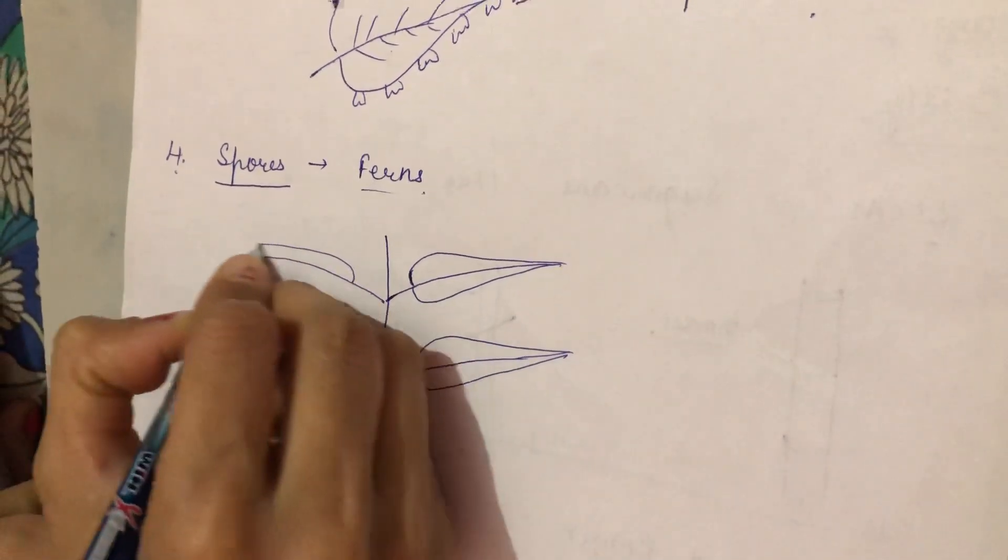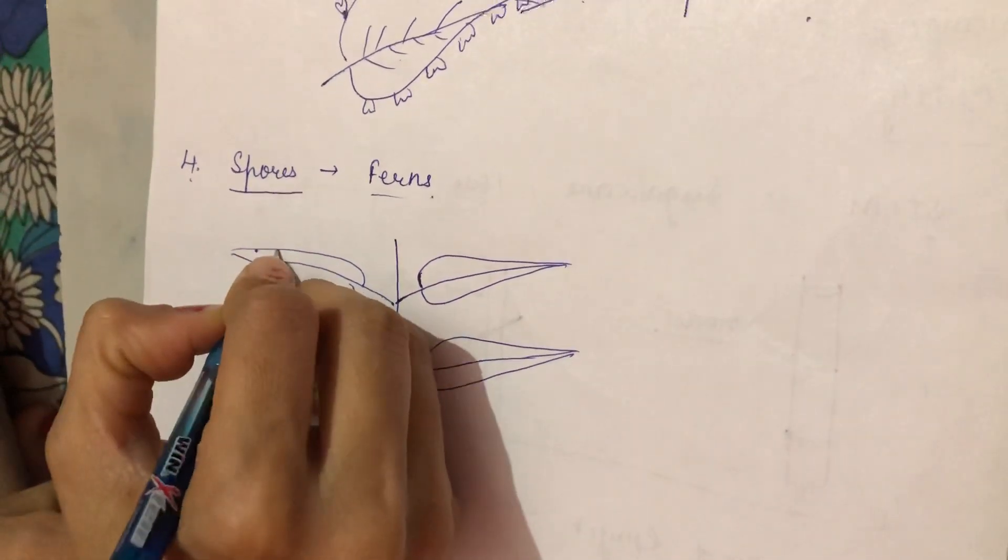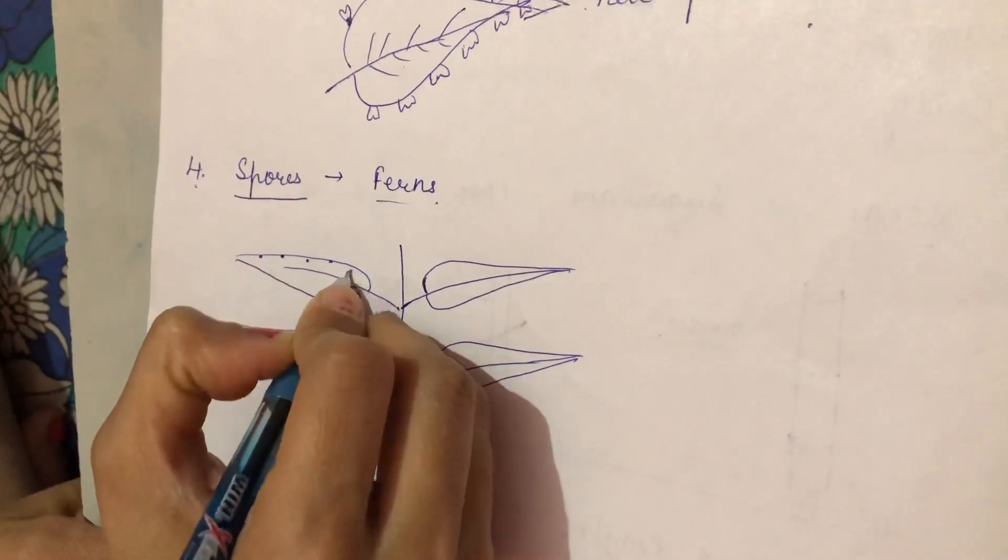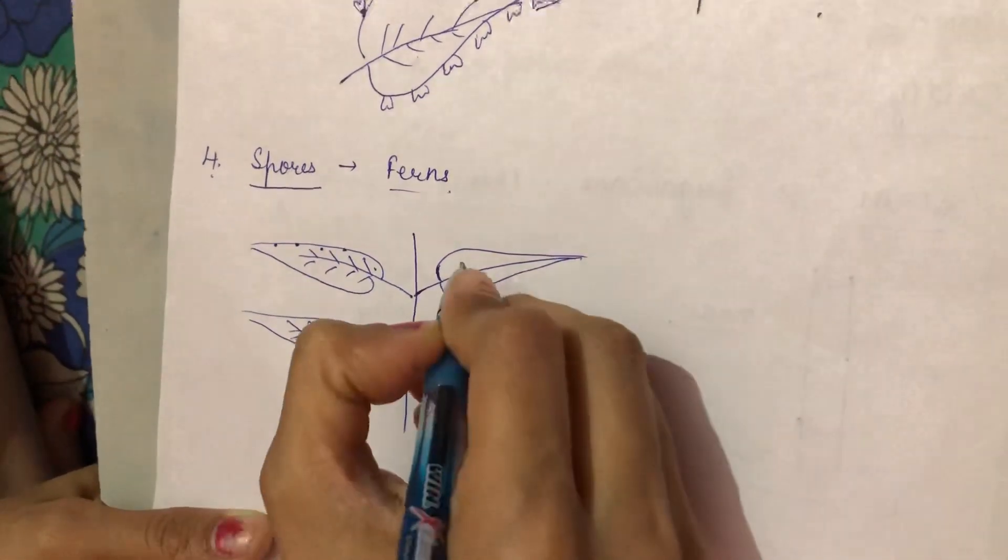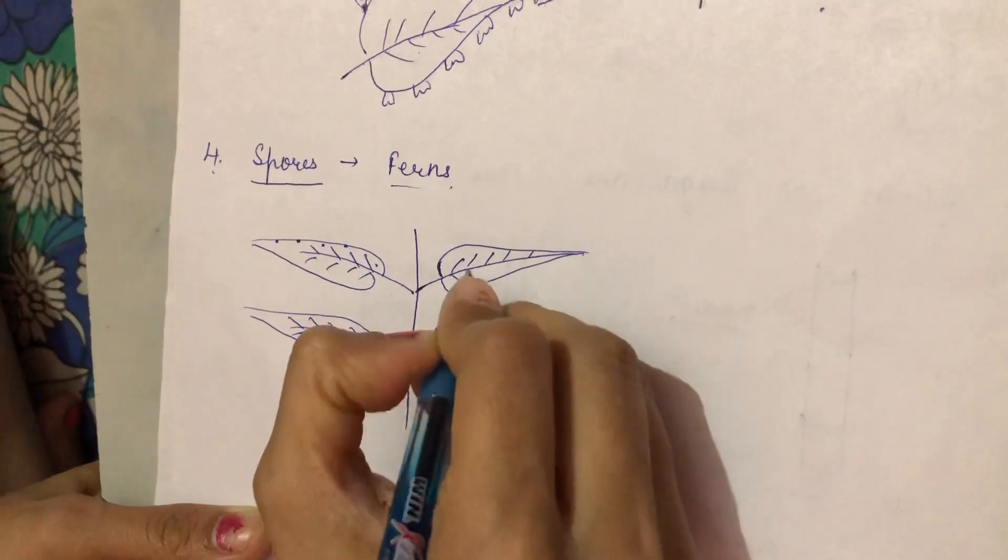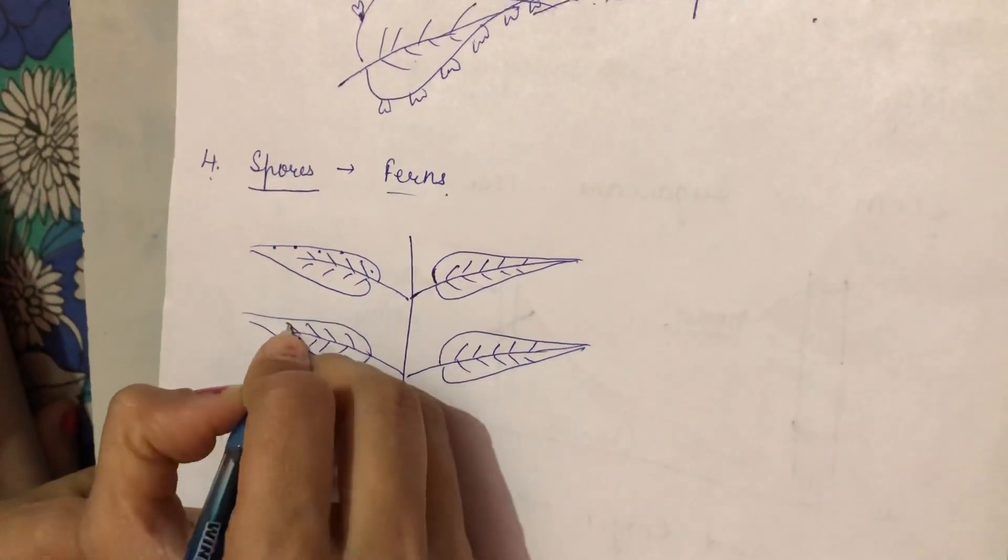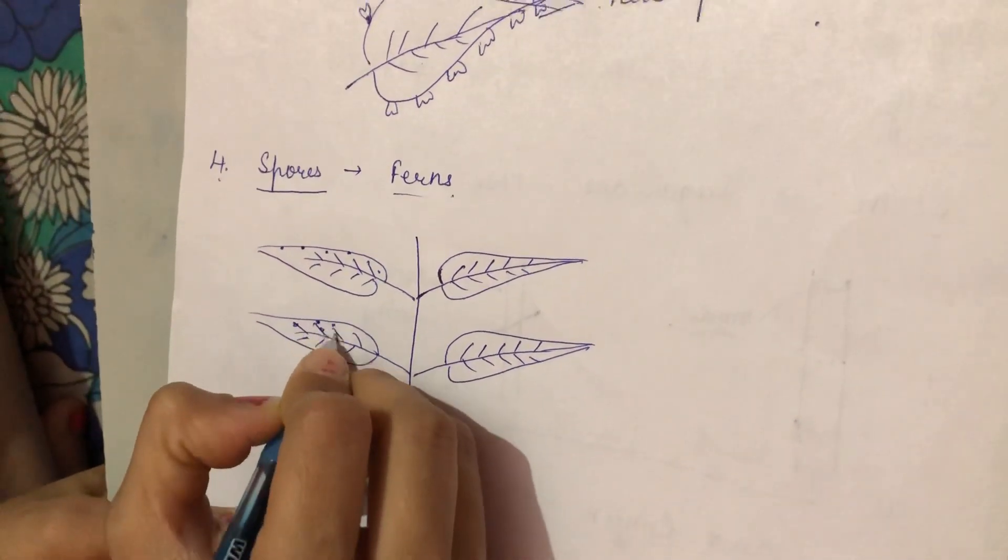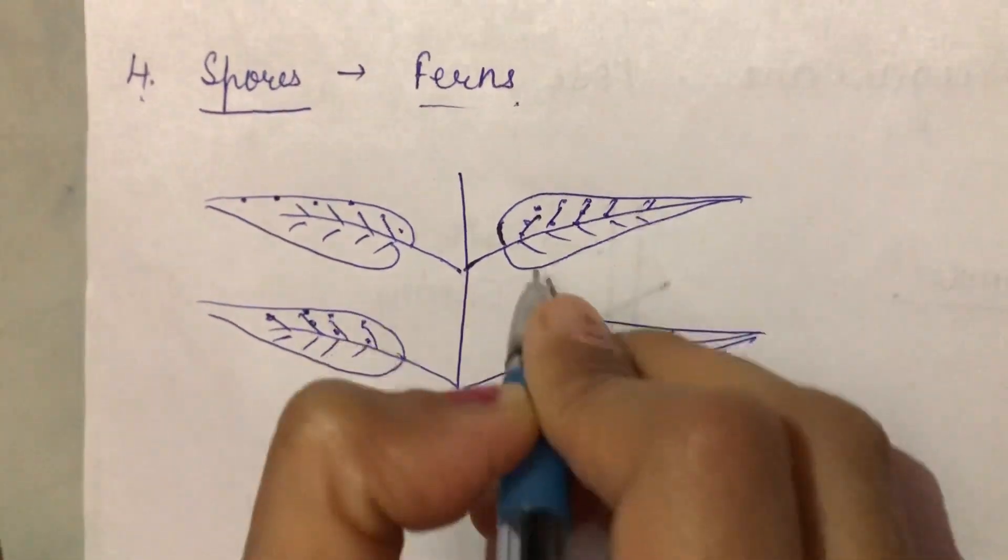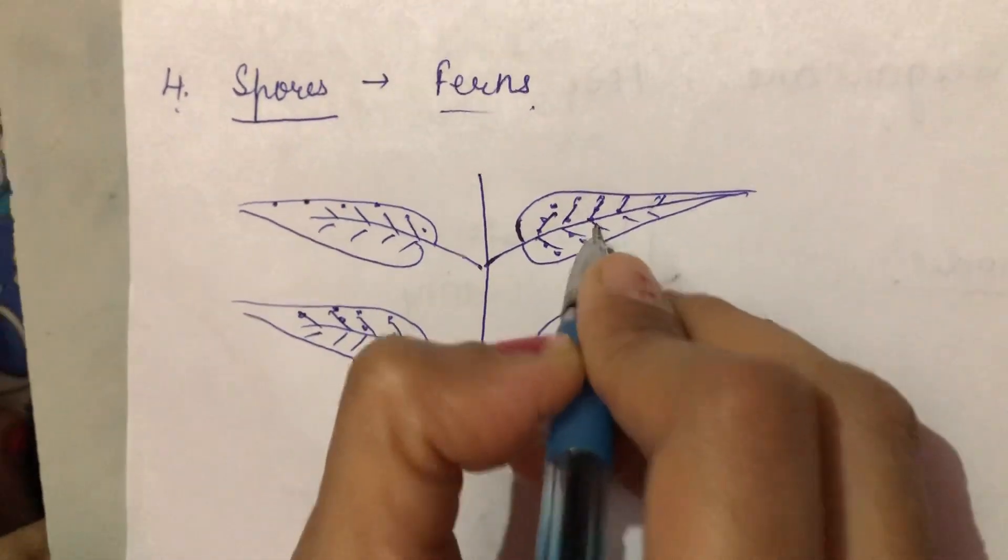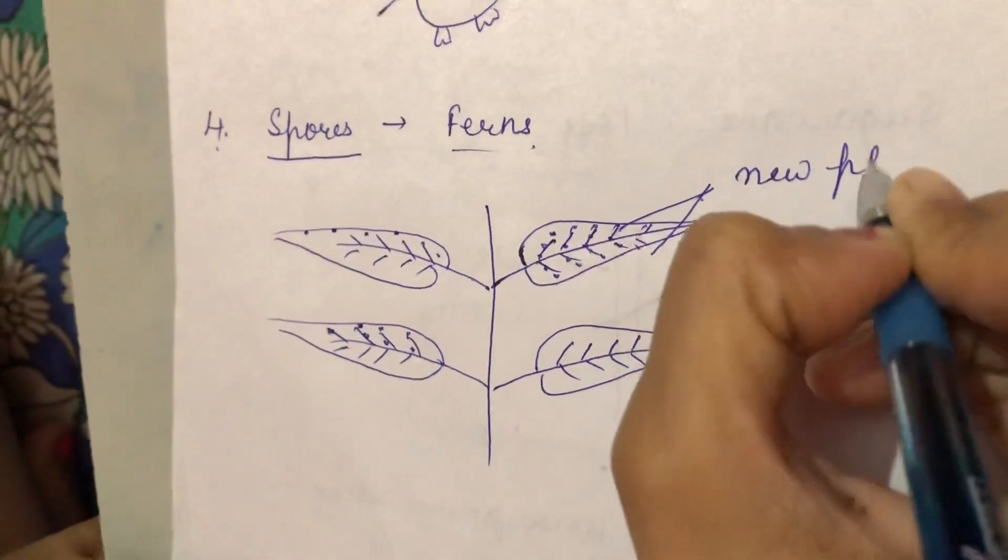Now we will discuss how spores grow into new plants. Spores are the powder-like substance present on the leaf of ferns. Then these spores fall on the ground and get favorable conditions, these grow into new plants.